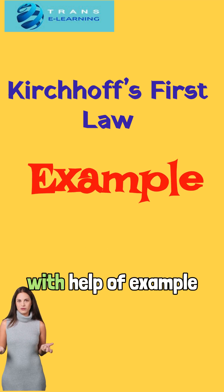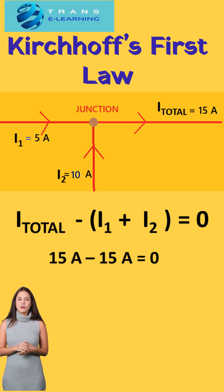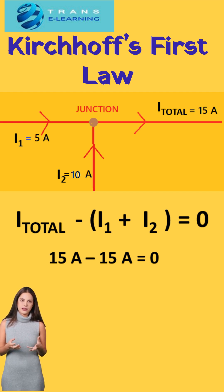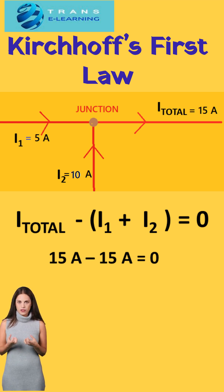Let us understand this with the help of an example. In this simple single-junction example, the total current leaving the junction is 15 Amperes, which is the algebraic sum of the two currents entering the junction: current 1, which is 5 Amperes, and current 2, which is 10 Amperes, such that the net total is zero.